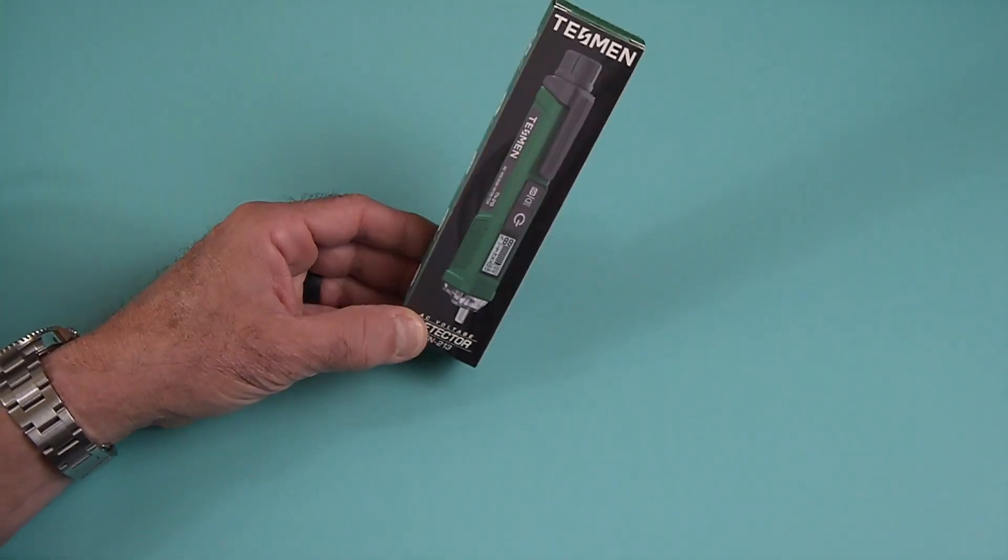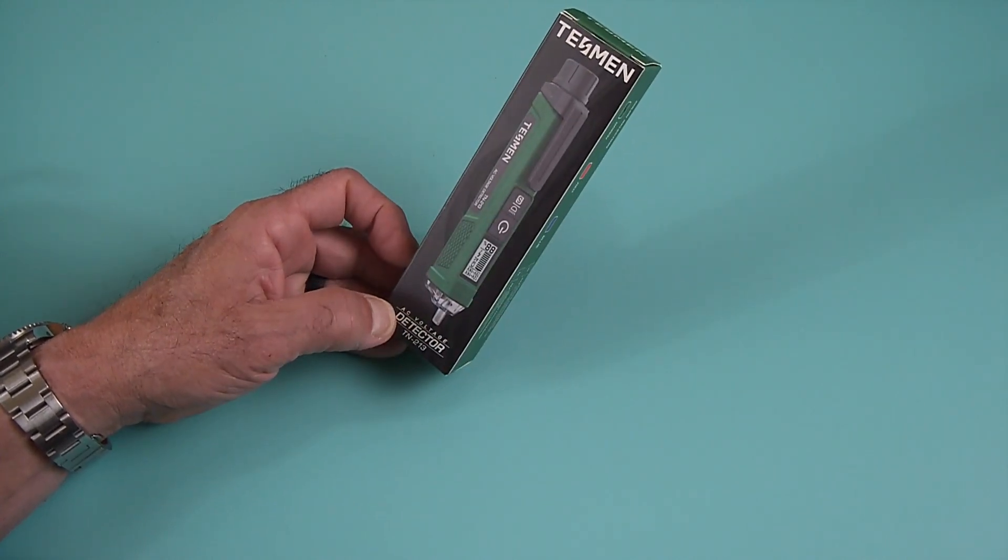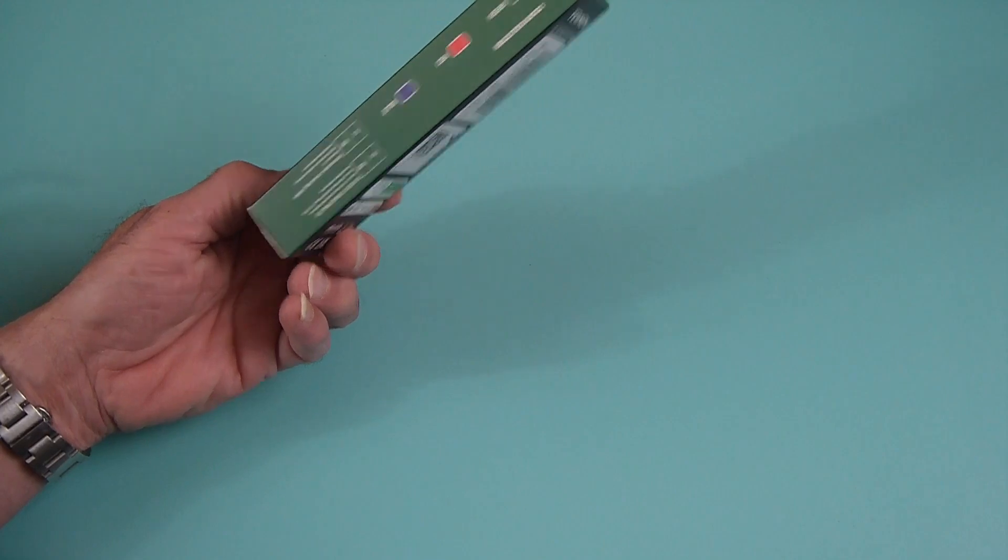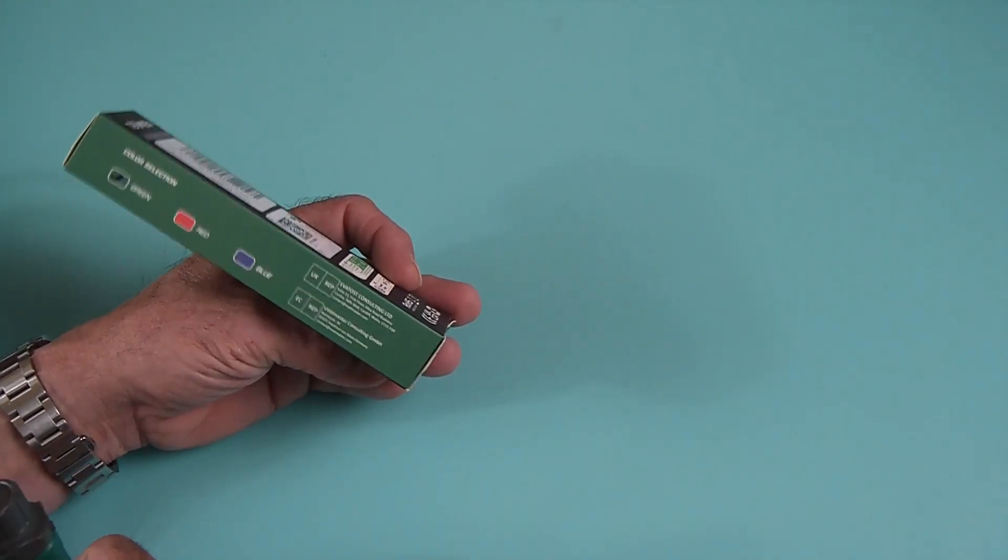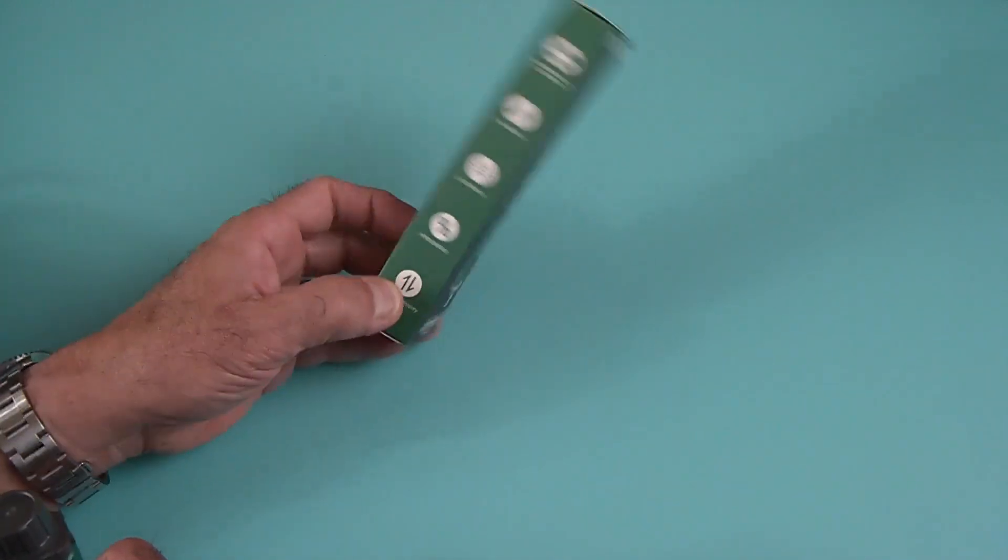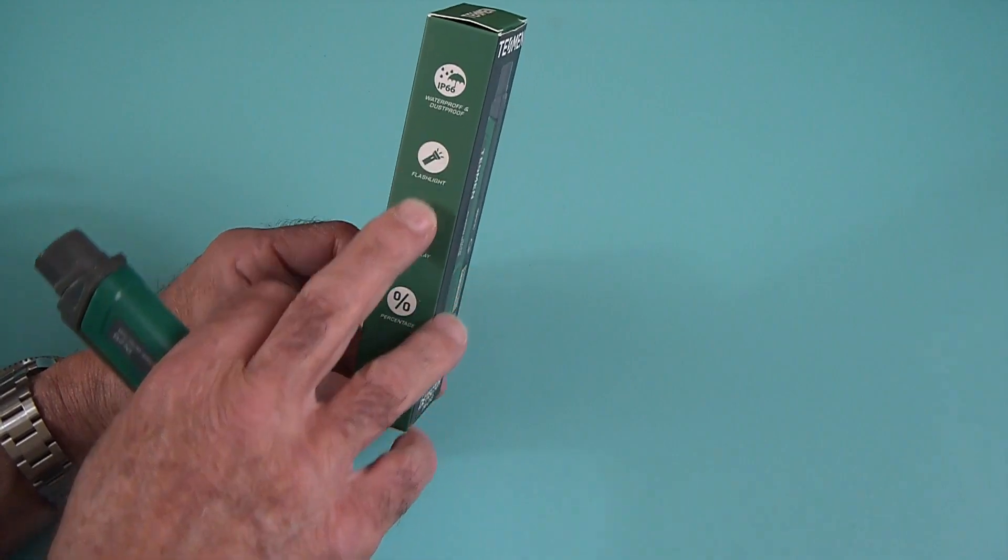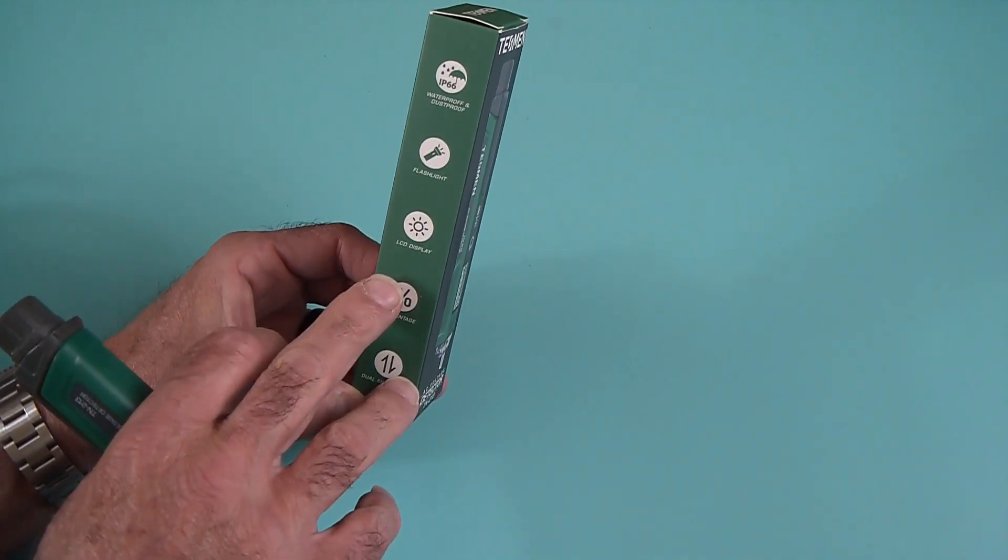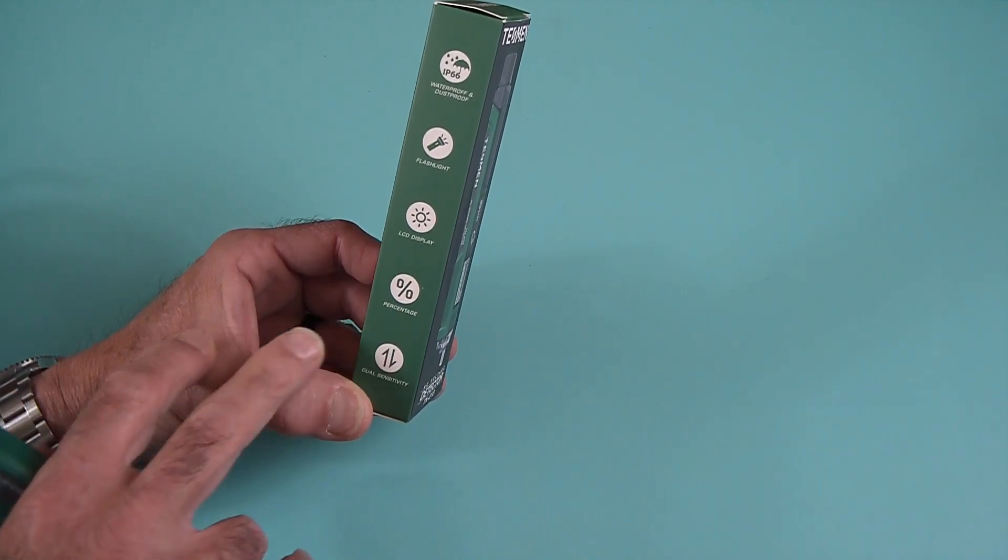These are pretty handy to have. Now I've had small ones and little pocketable ones, little ones like whatever. This is a new one that came out, apparently it's available in three different colors. I got the green one. It has a lot of features. It is waterproof and dustproof. It does have a flashlight. Yes, you need one of those when you're working in the dark. It's an LCD display. It shows you percentage and it's a dual sensitivity.